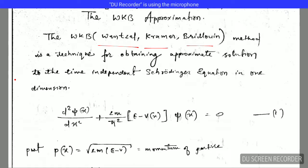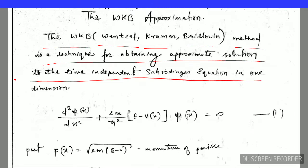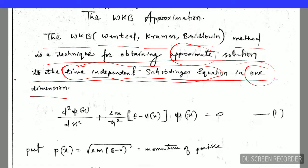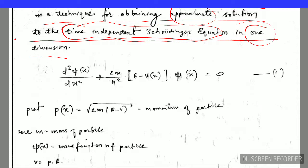The WKB method is a technique for obtaining approximate solutions to the time-independent Schrödinger wave equation in one dimension. It is important to note that this method gives only the approximate solution to the time-independent Schrödinger equation in one dimension, as you can see written here.